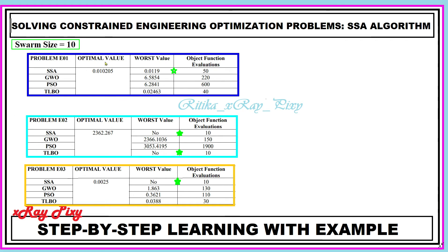For swarm size 10, we got the minimum value. We changed the swarm size or population size in the main file, and you can see the output for the first problem, the second problem, and the third problem. These two algorithms are providing the best solution in the minimum number of evaluations.